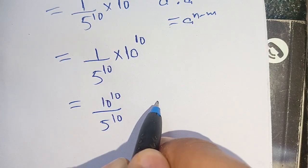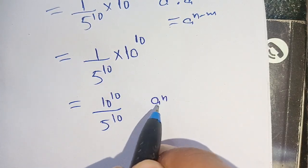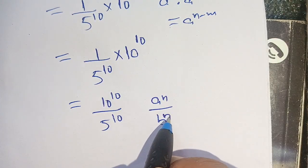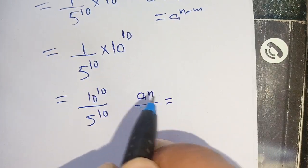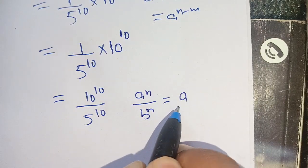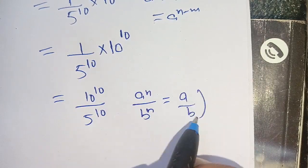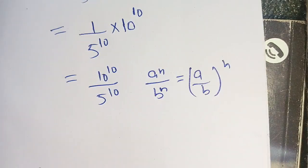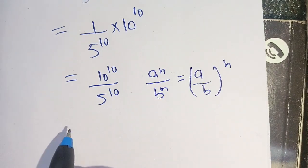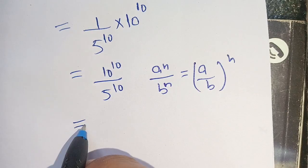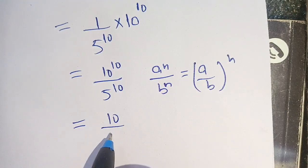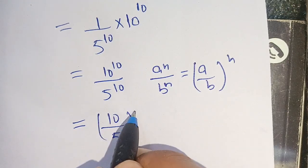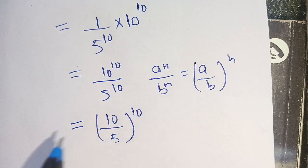By the identity that a raised to power n divided by b raised to power n is equal to a divided by b whole raised to power n, we can write it as 10 divided by 5, whole raised to power 10.